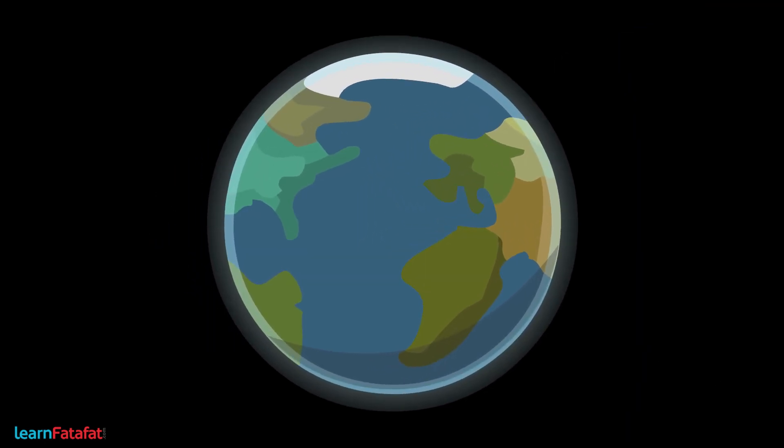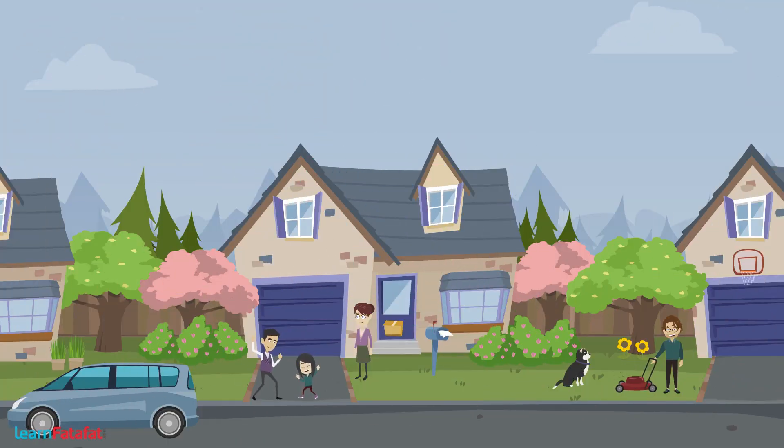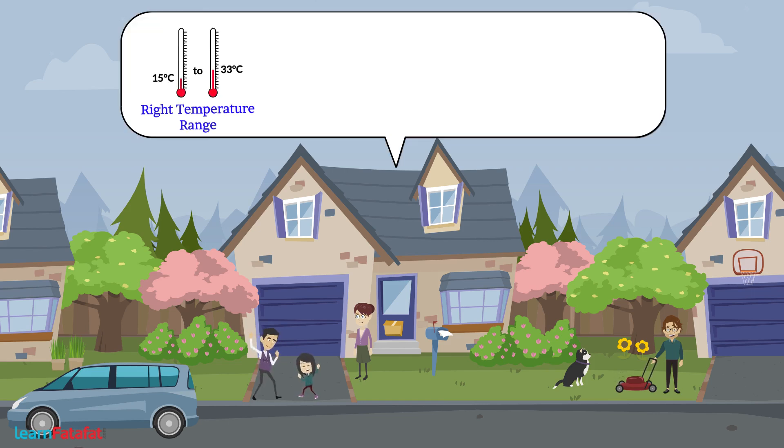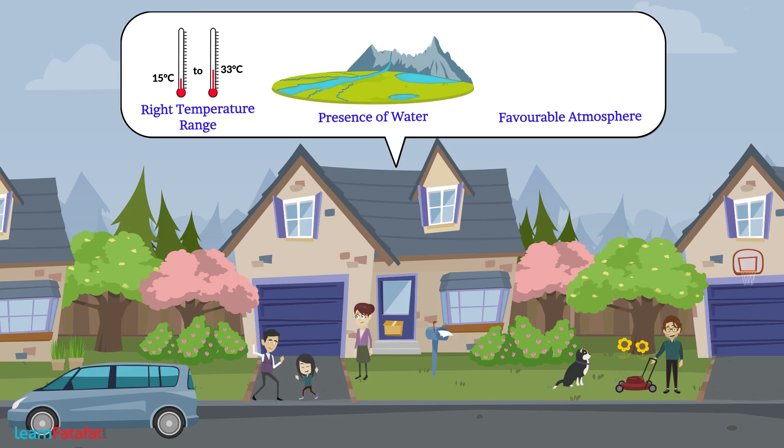Earth. The only planet in the solar system having life is Earth. Life exists on Earth because of the right temperature range, presence of water, and the favorable atmosphere along with the ozone layer.